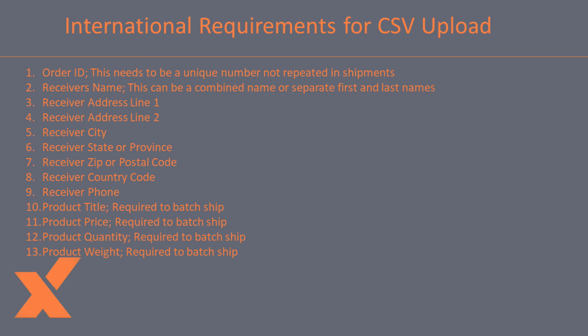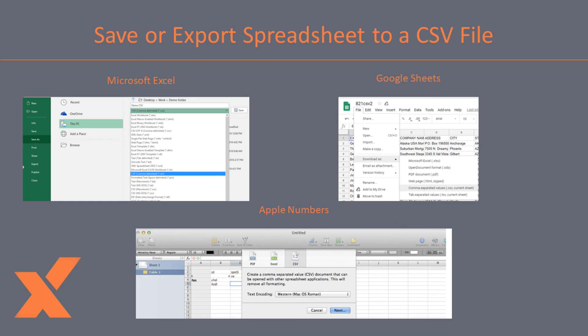Now that you have the minimum requirements in your spreadsheet, you will need to save the file as a CSV. The majority of spreadsheet files are Excel, Google Sheets, and Apple Numbers. To change the file type, go to File, then Save As or Export, and change the file type to CSV. With your file ready, you can now map XPS Ship for the specific CSV file.